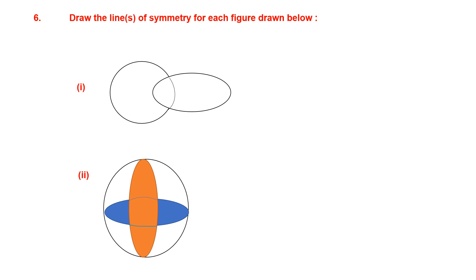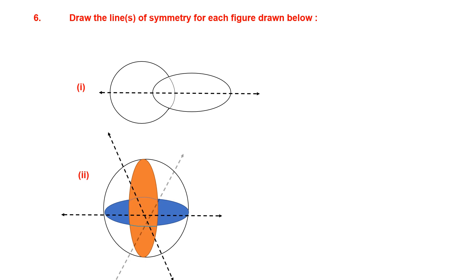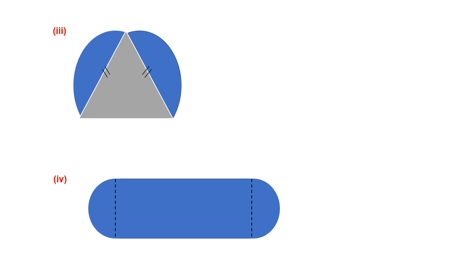Question 6: draw the lines of symmetry for each figure. Figure 1 has only one line of symmetry. Figure 2 is circular, so an infinite number of lines of symmetry can be drawn. Figure 3 is an isosceles triangle with two equal sides, so it has one line of symmetry bisecting the angle contained by the two equal sides.